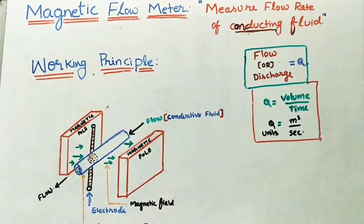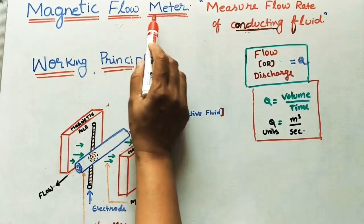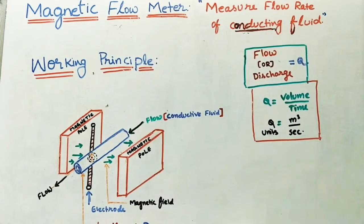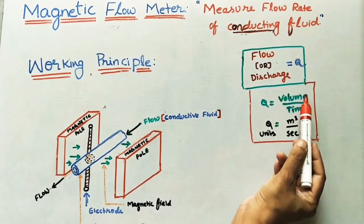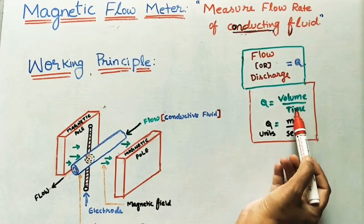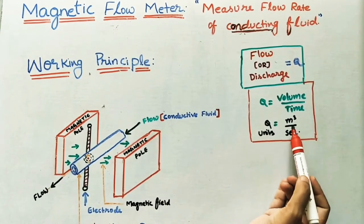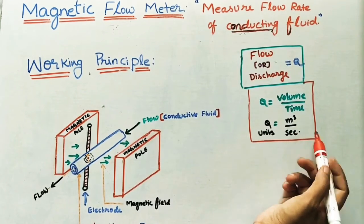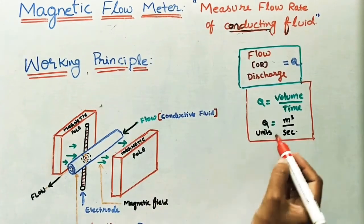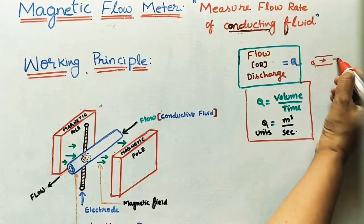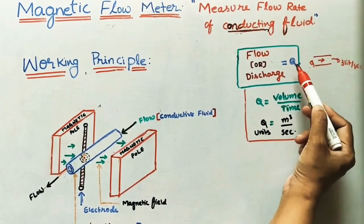Today we will discuss the magnetic flow meter. First, what is a flow meter? A flow meter indicates the reading of discharge or flow. Flow and discharge are the same — they measure how much volume of water is coming from a pipe, turbine, or pump per unit time. Units are meter cube per second, minute, or hour. For example, three liters of water per second is called discharge or flow.